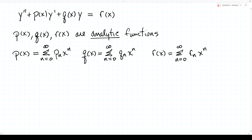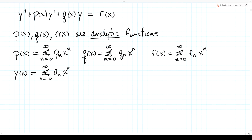Analytic functions can be arbitrarily well approximated by polynomials of sufficiently high order. If that is the case, we are guaranteed that our solution is also analytic and can be written as y = Σ (n=0 to ∞) a_n x^n. We plug these expressions into our equation and solve for the coefficients a_n. To do that, we need y' and y''.